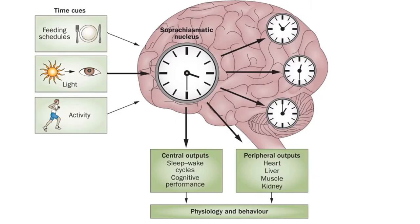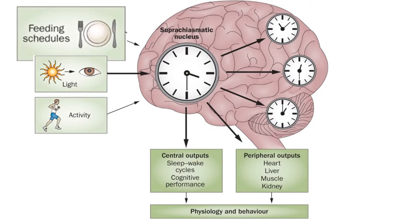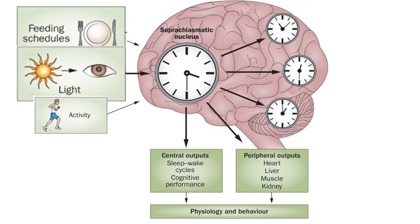Feeding schedule affects our internal clock. On awakening, if we eat a hearty breakfast, we are more alert, and we should eat dinner 2 to 3 hours before our sleep time for a good night's sleep. Daylight exposure, especially outdoors early in the morning, is very important. Bright light exposure at night will delay our sleep time.